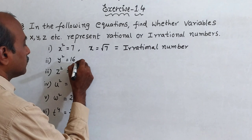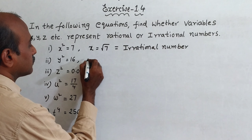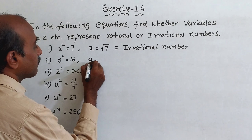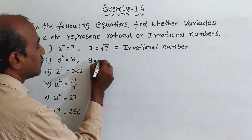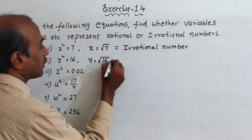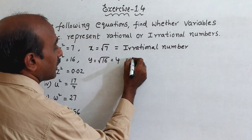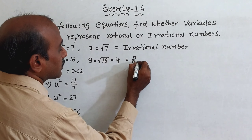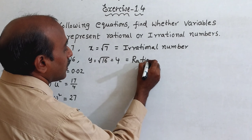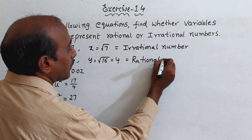Second one: y squared is equal to 16, so y is equal to under root 16. Under root 16 is equal to 4, so this is a rational number.